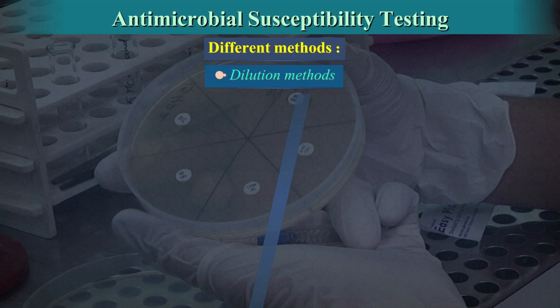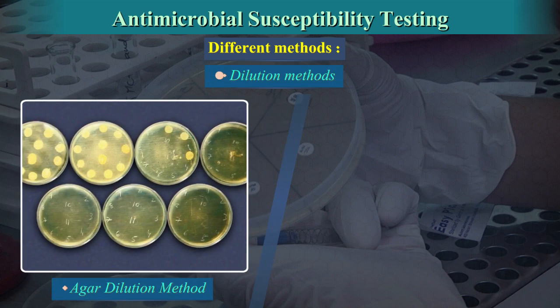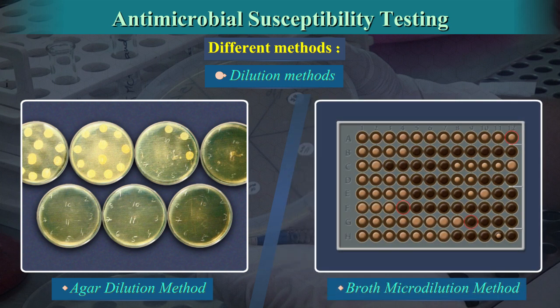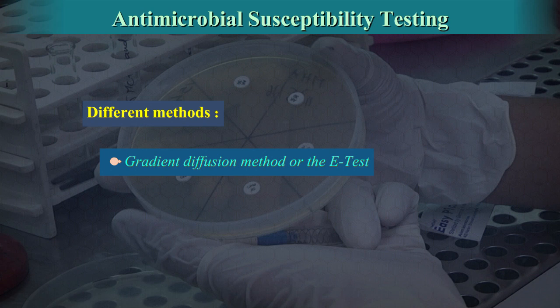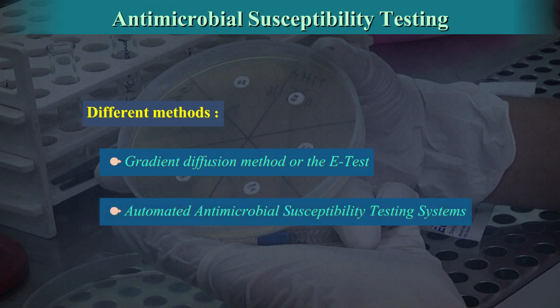Dilution methods, which can be classified as Agar dilution method and Broth micro-dilution method. Gradient diffusion method, also known as the E-test, and Automated antimicrobial susceptibility testing systems.